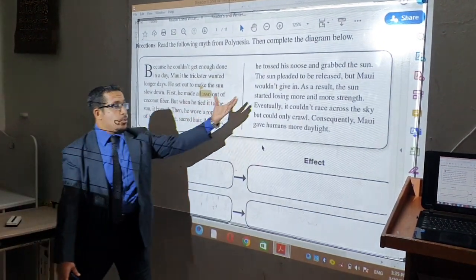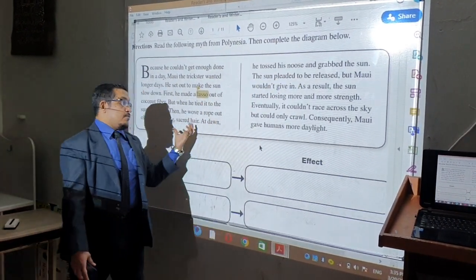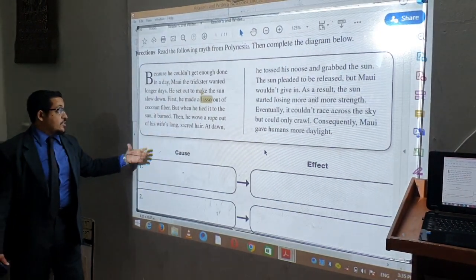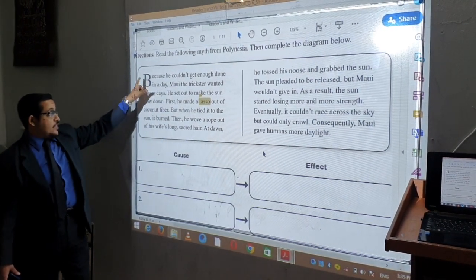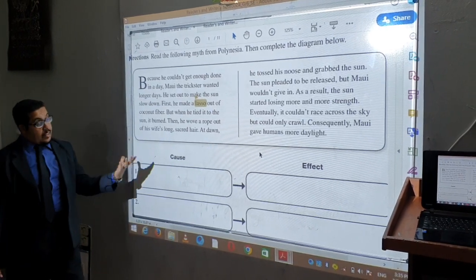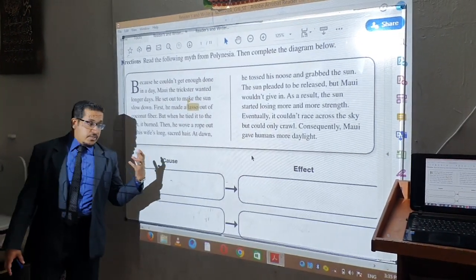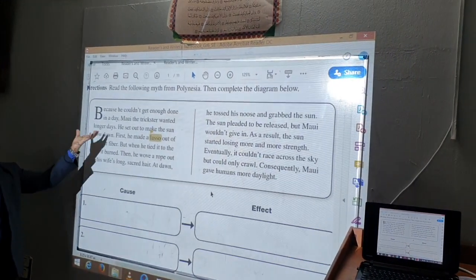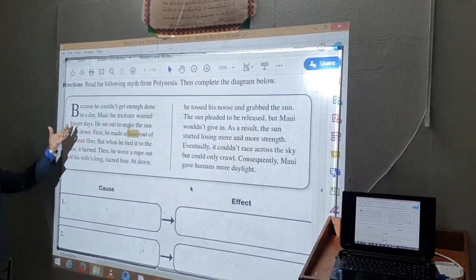So he was able to grab the sun as a result. So we can write for the first post about this part. He said, because he couldn't get enough done in a day, it means that he had a short time. So what happened? Maui wanted longer days.